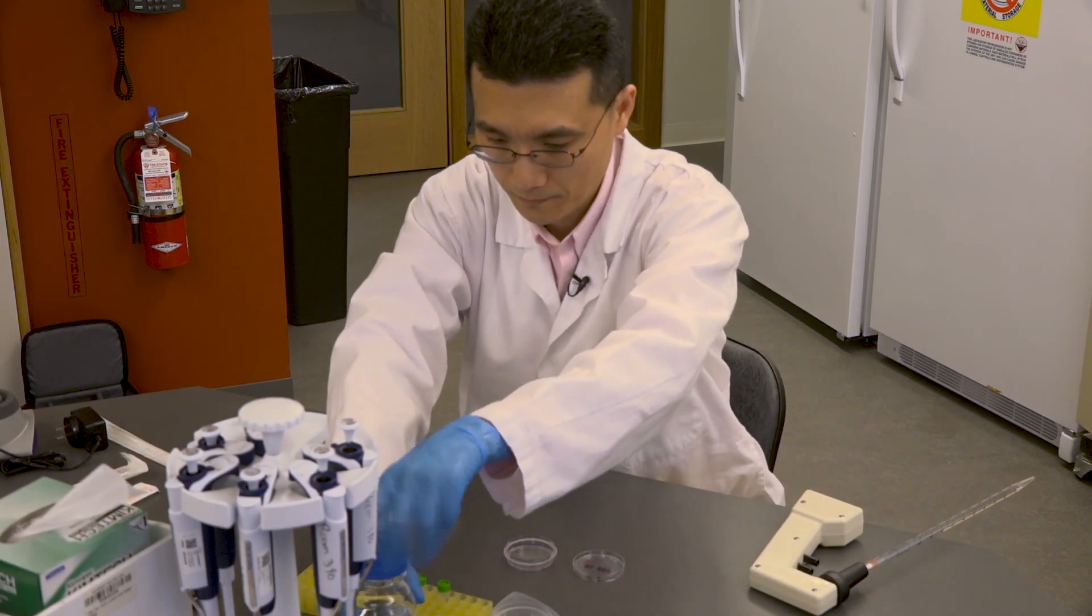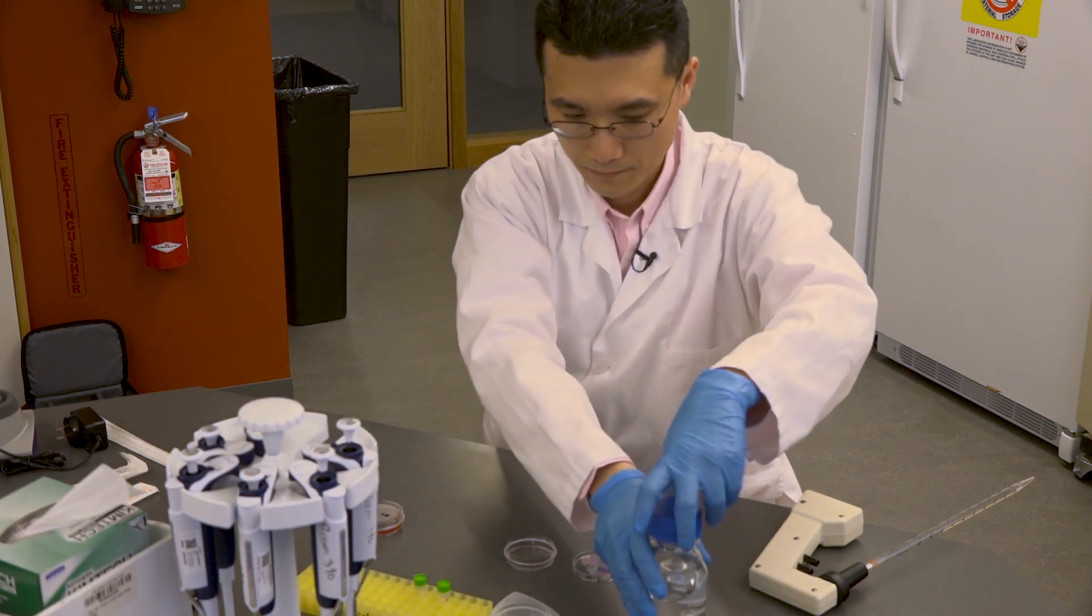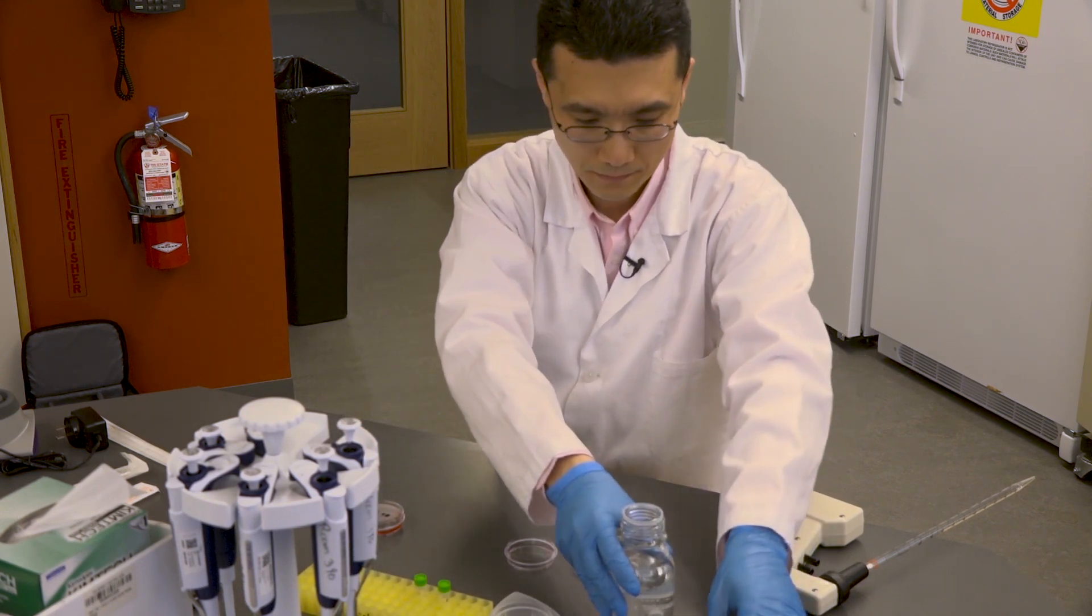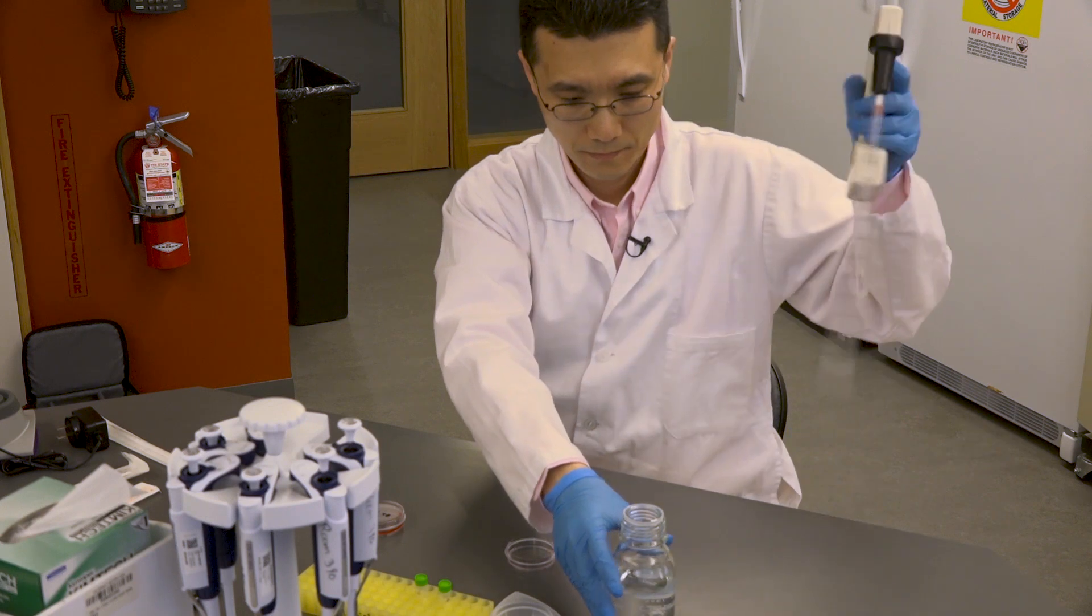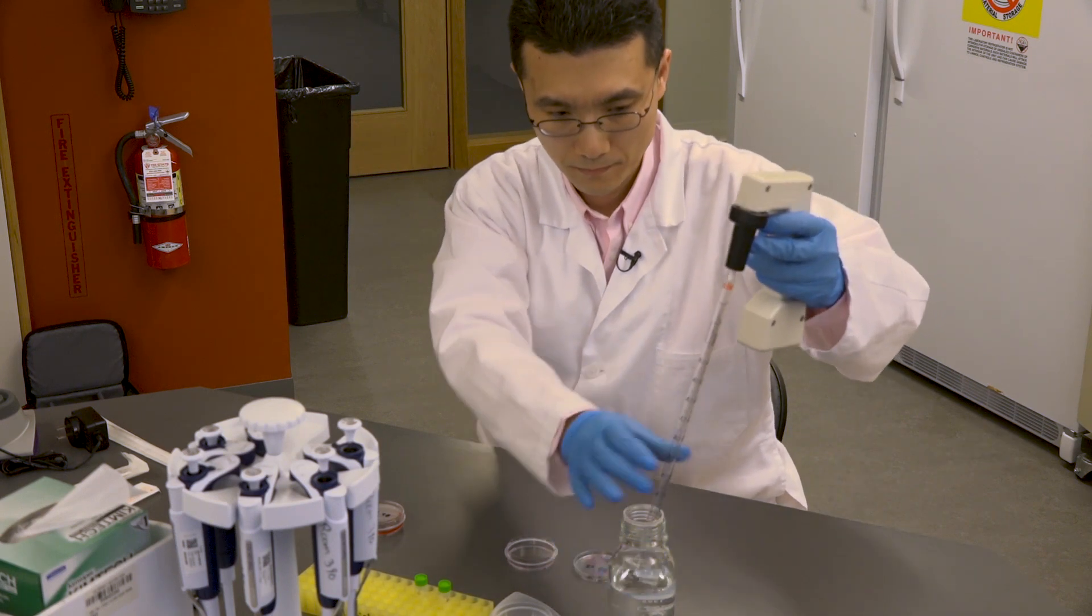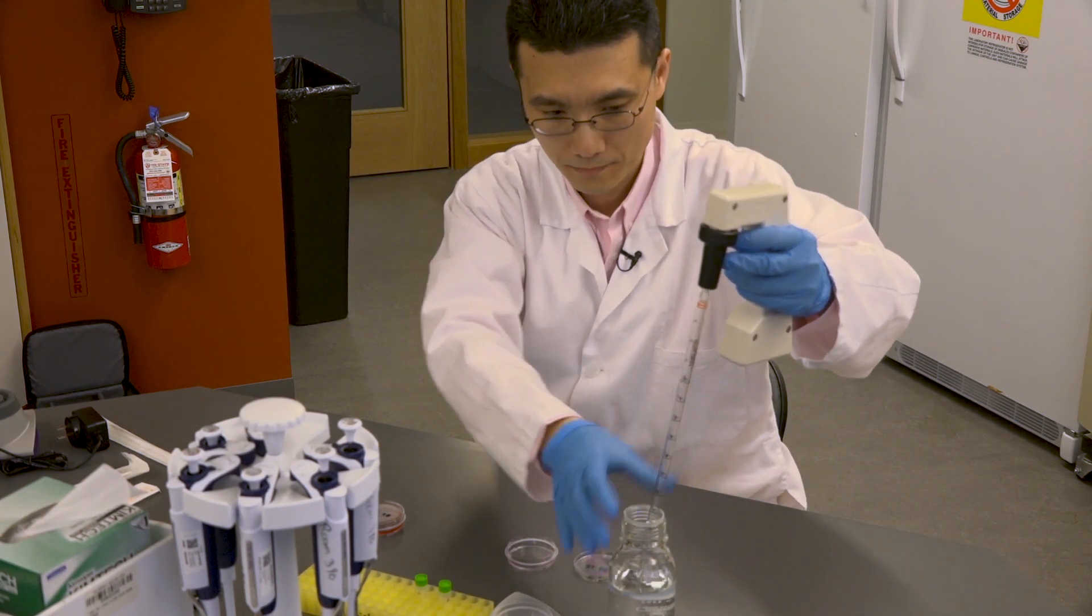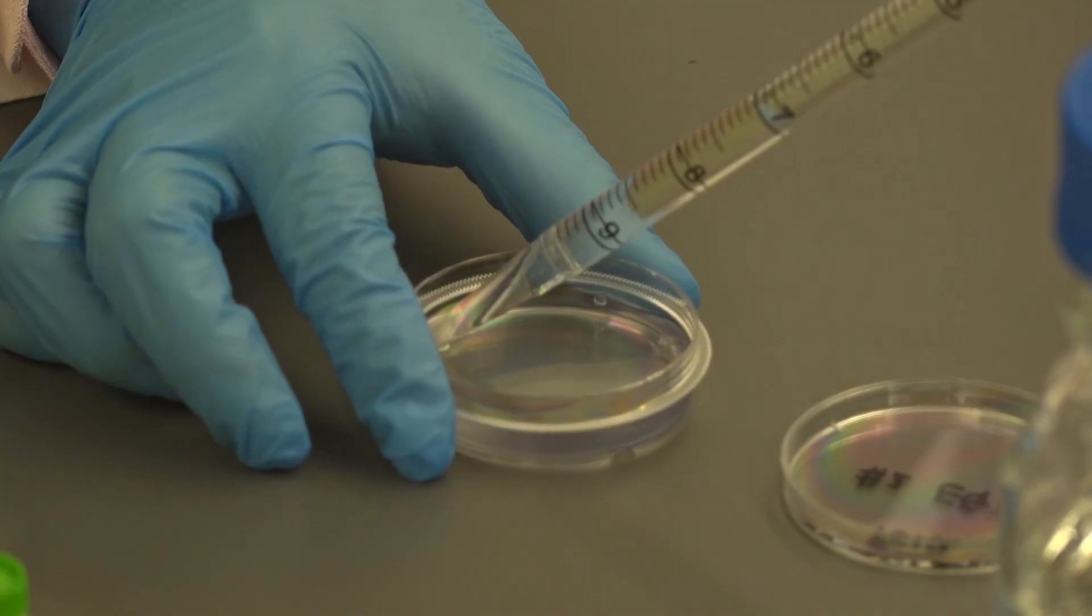To do the wash, simply pipette 10 milliliters of TBS into a 10-mil serological pipette. Dispense 5 milliliters into one dish and the remaining into the other dish.